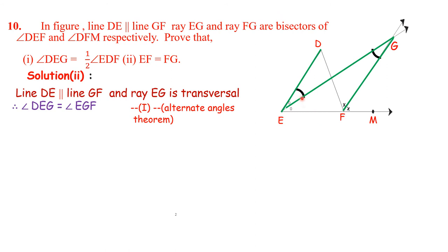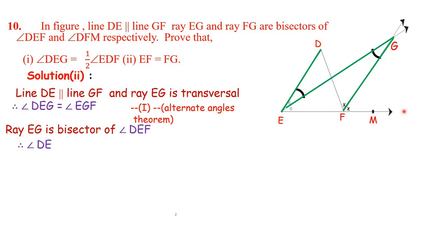Second part: EG is the bisector of angle DEF. Therefore, angle DEG is equal to angle GEF. This is statement number 2.